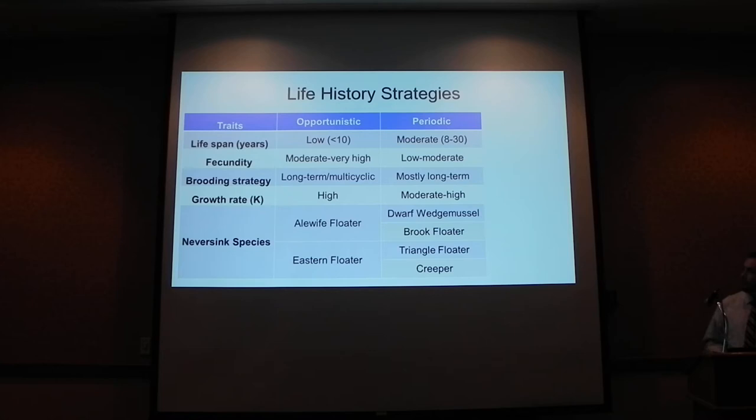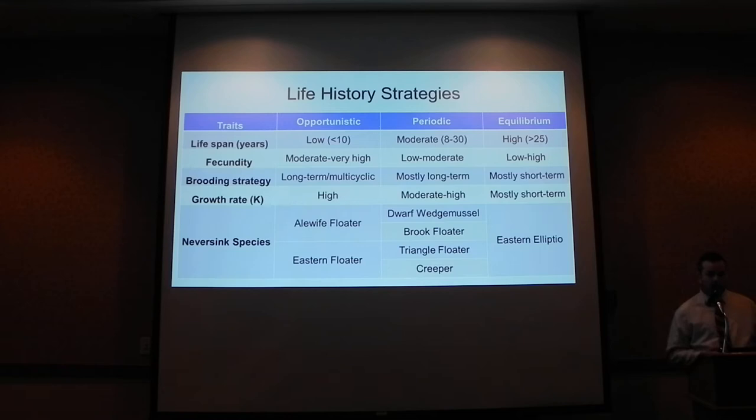Lastly, we have equilibrium species, which are really long-lived mussels with lower fecundity. They use a different brooding strategy: spawning early in the spring and releasing their glochidia that following summer. In the Neversink, these are represented solely by the eastern elliptio.